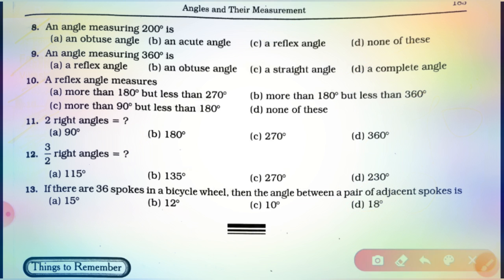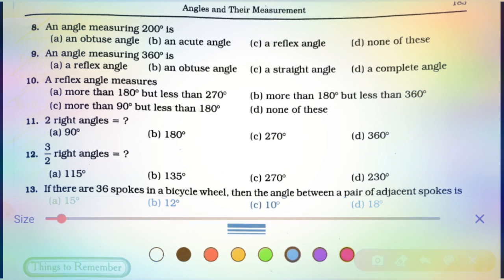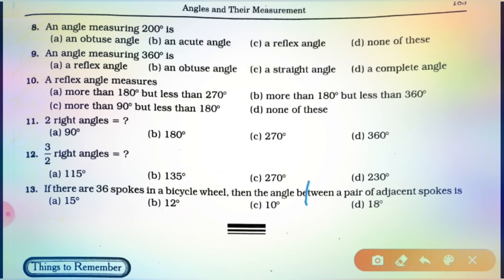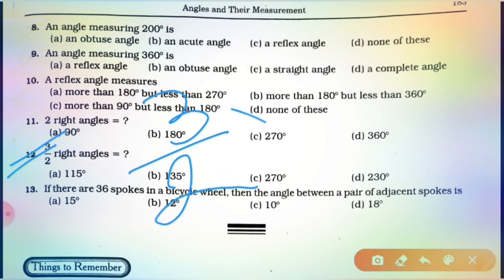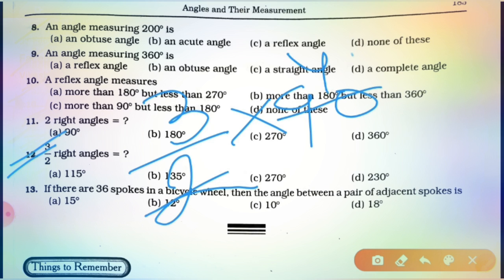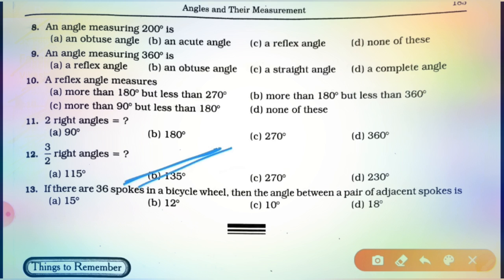Now, proceed to question number 12. In question number 12, observe: 3/2 right angles. That means 3/2 into 90 degrees. Here, 45 times 3 — and, students, when you multiply 45 into 3, you will get 135. Clear, students? 135 degrees is the angle equal to 3/2 right angles.